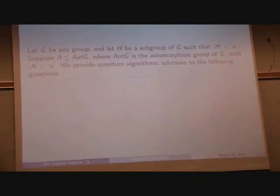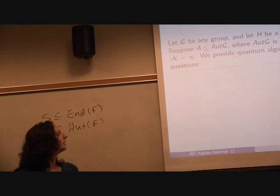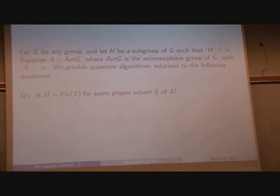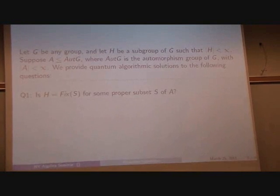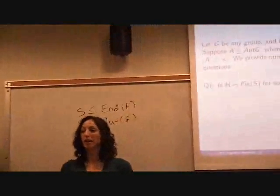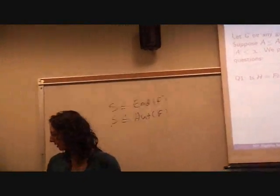Now you don't have to restrict ourselves to the free group. If we let G be any group and H is a subgroup of G such that H is finite, suppose we have a subgroup of the automorphism group of G, and again A must be finite. We provide the quantum algorithmic solution to the following question: Is H equal to fixed S for some proper subset S of A? A is finite, H is finite. We're asking this question, and in the affirmative case we actually provide S, which is automorphisms only. We're not concerned with endomorphisms.